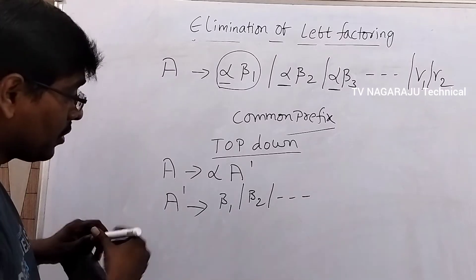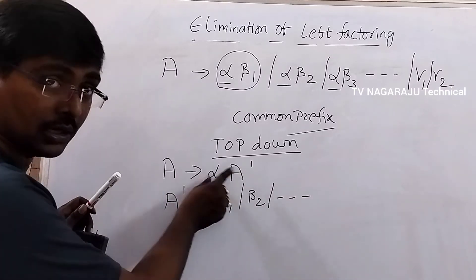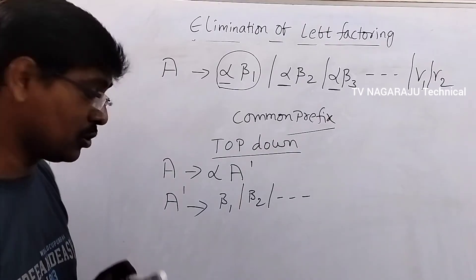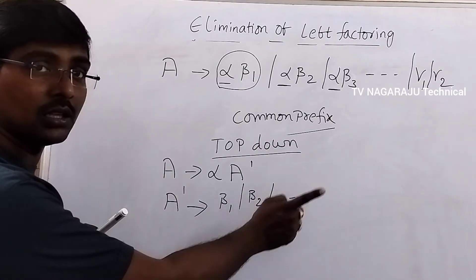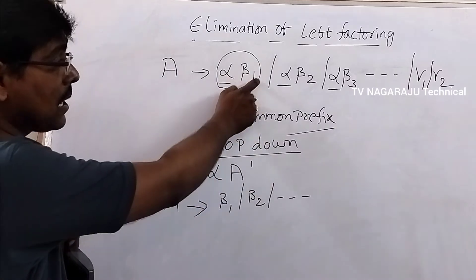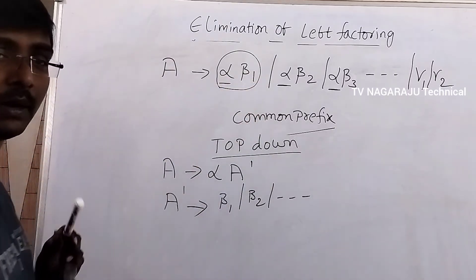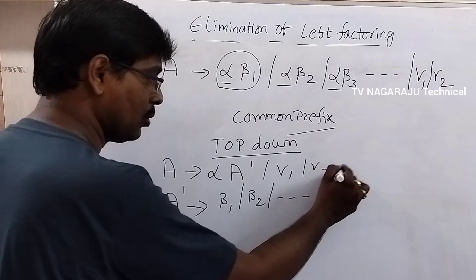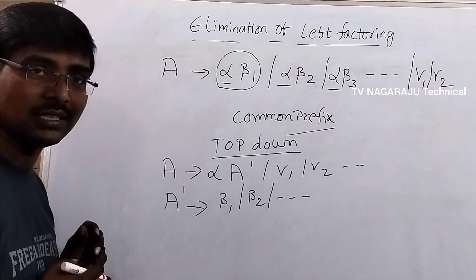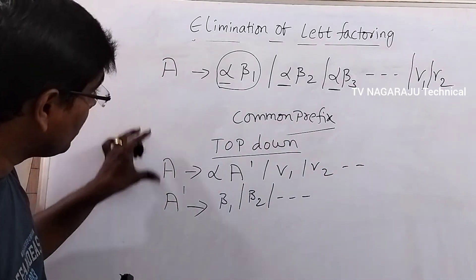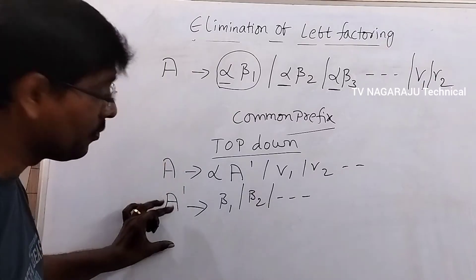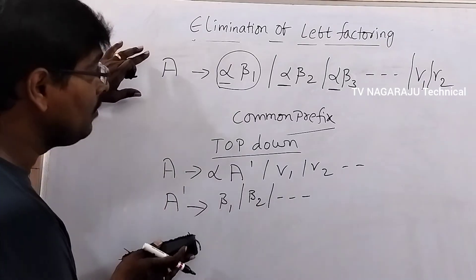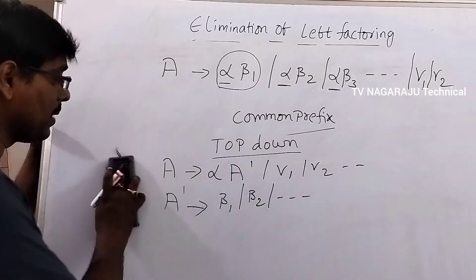Now observe: first we select the production that starts with alpha, and then based on the next character in the input string we select either beta1, beta2, and so on. The non-terminals gamma1, gamma2 are written as-is. This is the way to eliminate left factoring.